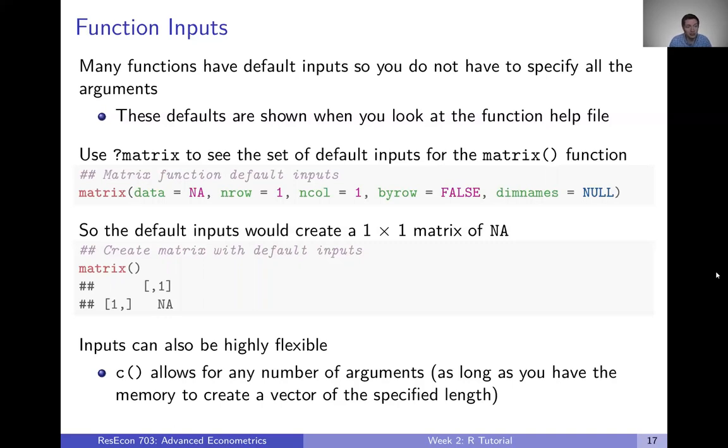So let's go ahead and type in question mark matrix, and we can see more information about the matrix function, including any of the default inputs. And it turns out for matrix, we actually have five different inputs we could give the function, and they all already have defaults specified. So data is already specified as NA, which is just like a missing data tag for R. Number of rows is one, number of columns is one, by row is false meaning it's going to do by column, and then dim names, this is going to be something that can name the rows and columns, that's set to null.